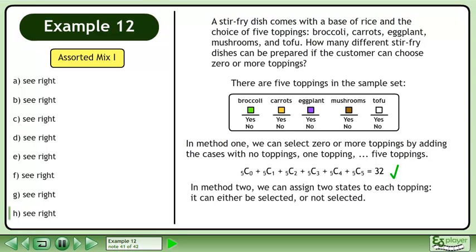In Method 2, we can assign two states to each topping. It can either be selected or not selected.